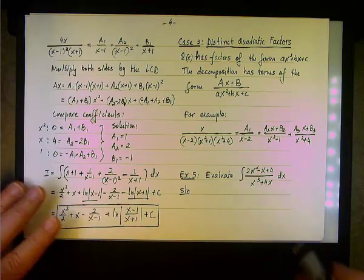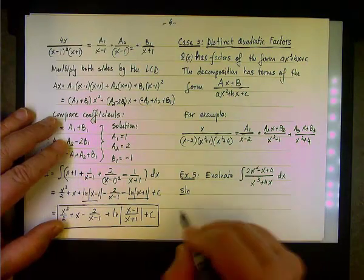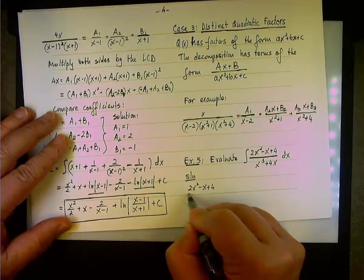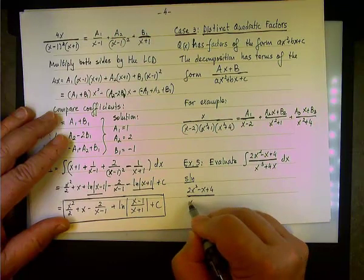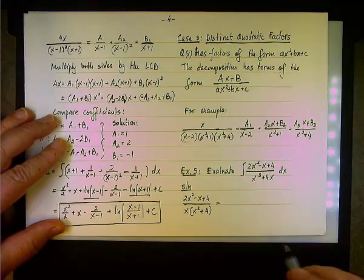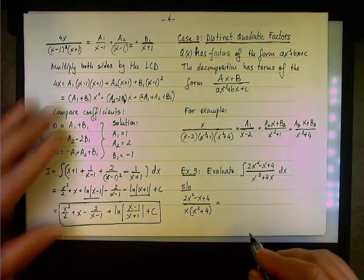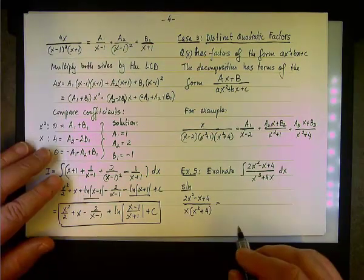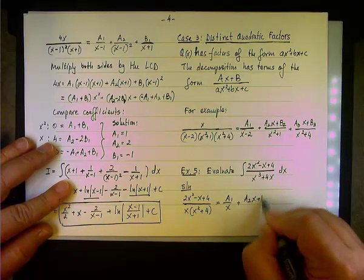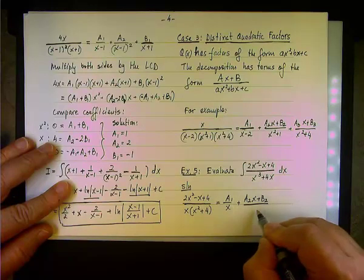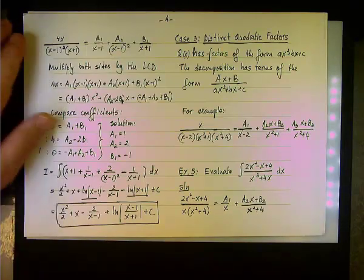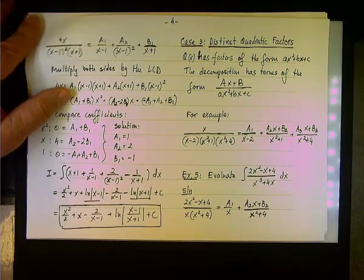We can go right away into the partial fraction decomposition. We write (2x² − x + 4) / [x(x² + 4)] — factoring x out of the denominator — and since we have a linear factor and a quadratic factor, we break it down as A1/x + (A2x + B2)/(x² + 4). We need to find values for A1, A2, and B2.